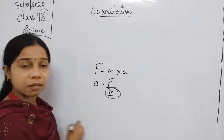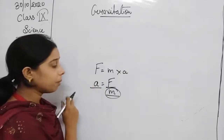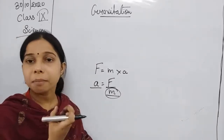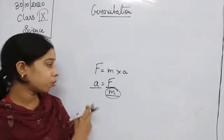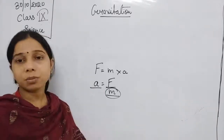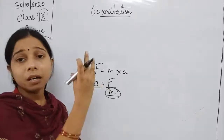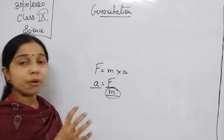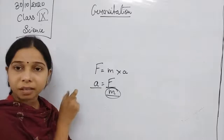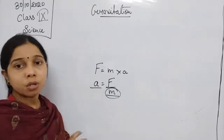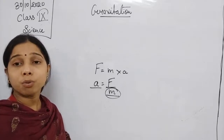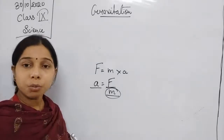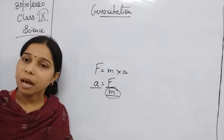Mass is inversely proportional to acceleration — more mass means less acceleration, less mass means more acceleration. The ball is smaller in mass, so it has more acceleration, and that is why you can see the ball coming downward. Due to the very large mass of the earth, its acceleration is nil or very low, so it is not possible for us to see the earth moving upward. This is how Newton's law is related to gravitation.